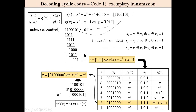For an exemplary transmission using the same code and same generator polynomial, we have a word given in both polynomial and binary description. We divide this word by the generator polynomial to calculate the syndrome, which is triple-one (1,1,1). We then go to the already-prepared lookup table and search for the syndrome 1,1,1 — three ones — which corresponds to a specific error pattern. This error pattern is then added to the received word to give the decoder decision.